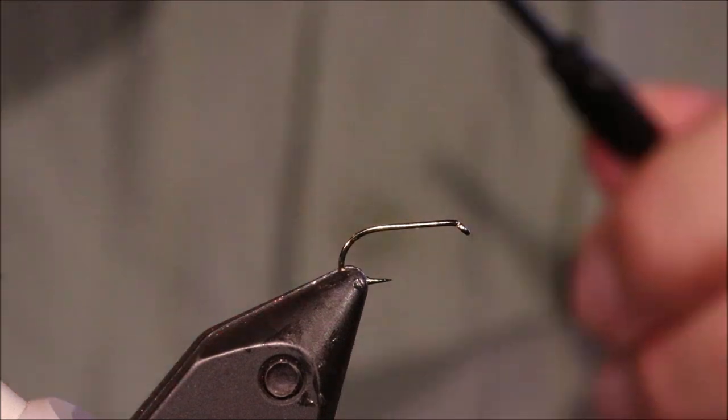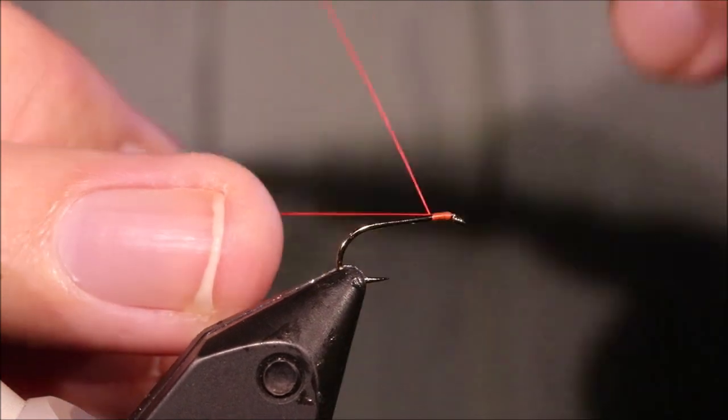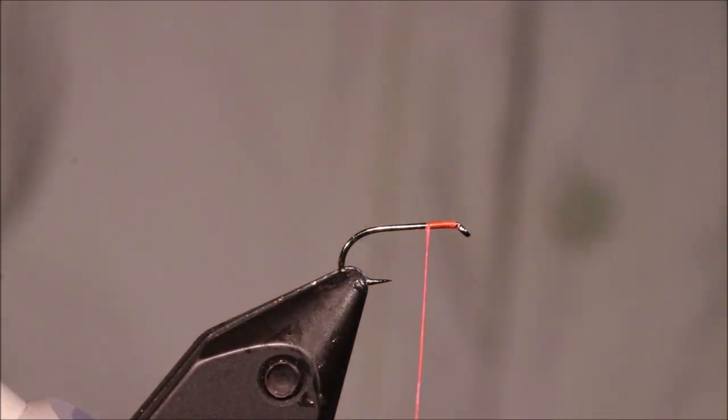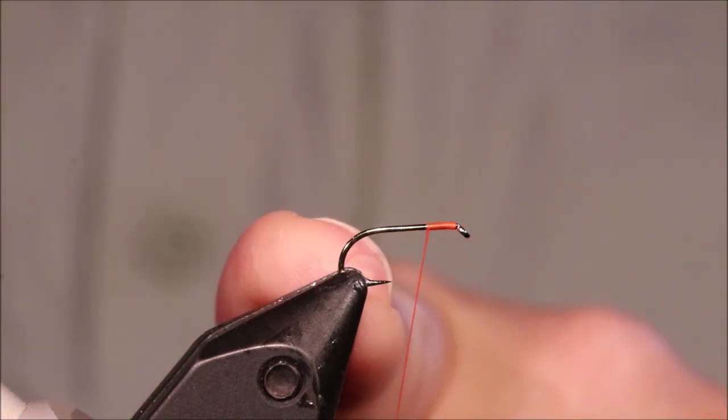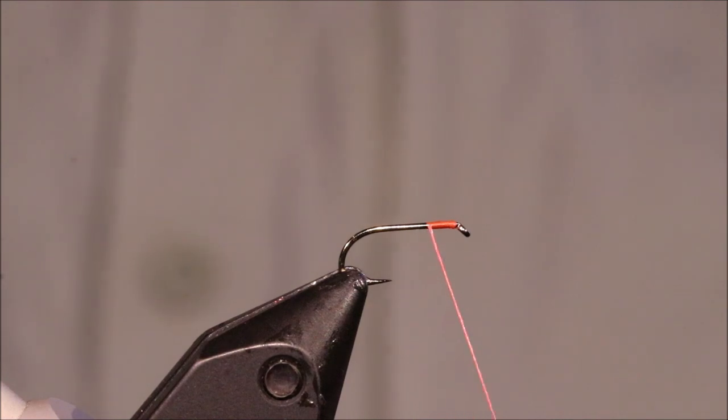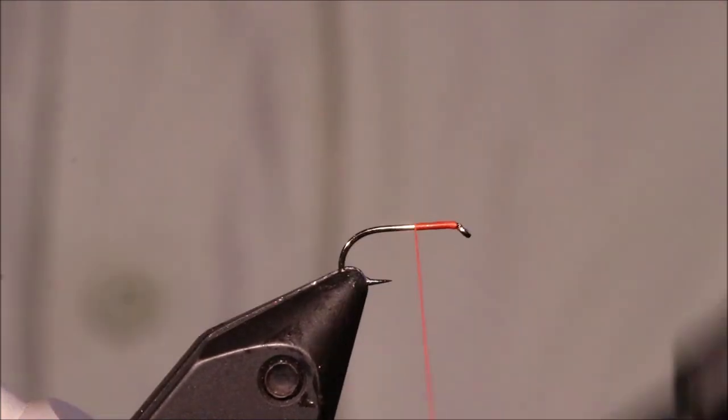So I've got my hook in my vise and I'm just starting some 8-Ott Uni in Fire Orange. This is a size 14. It's a full amount all-purpose medium weight. You can use any standard shank medium to lightweight hook like a Camazon B170.